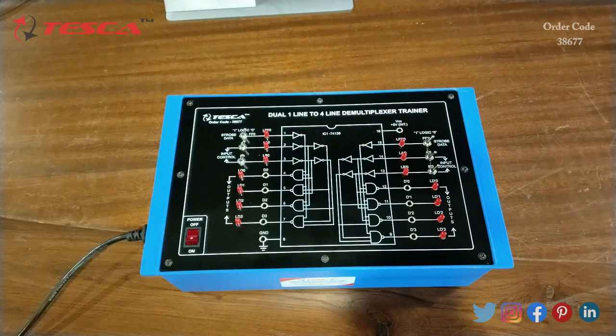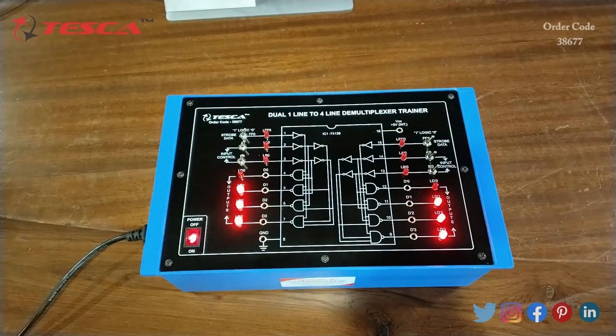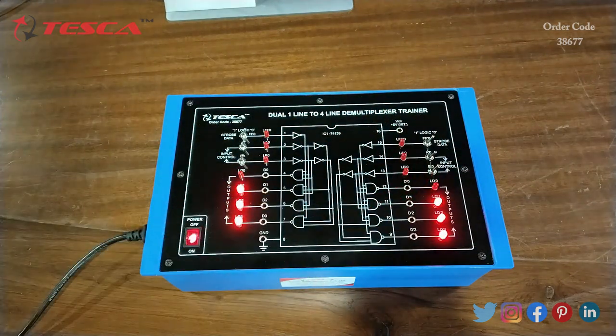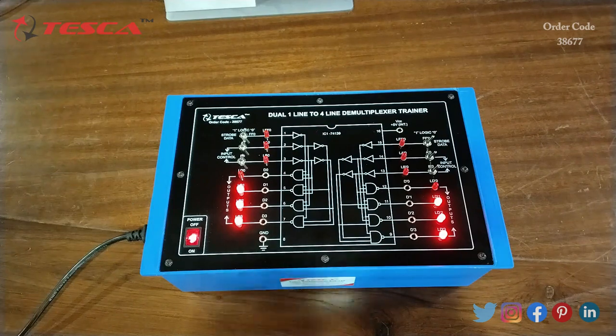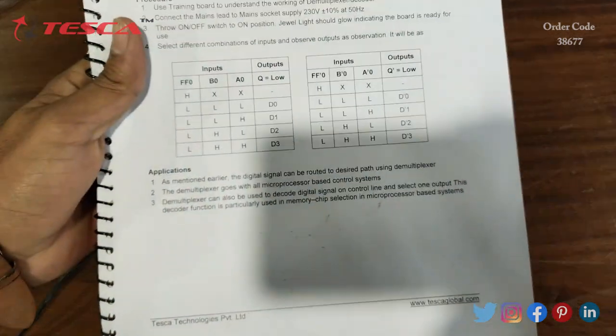Now let's see the working of this kit. First we switch on the kit and keep all switch positions at 0 logic like this. Now we will compare the truth tables from the manual.